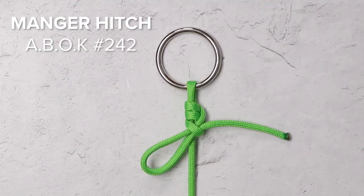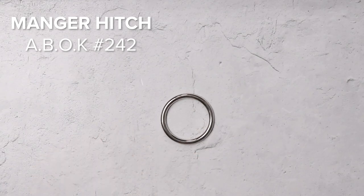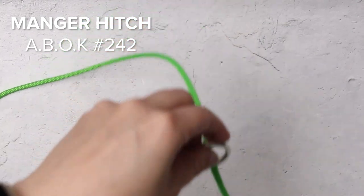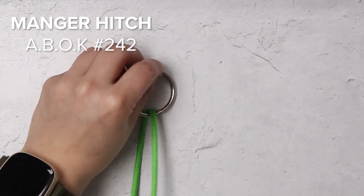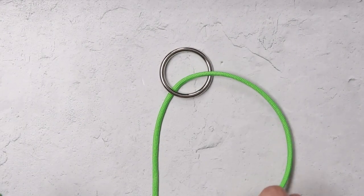Our first knot is the manger knot. To start your manger knot, you want to pass your working end through your ring or where you'll be hitching your knot to and then pass your working end over the top of your stationary end.